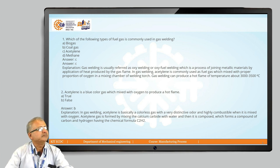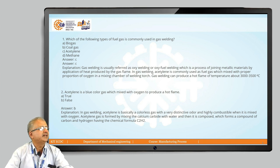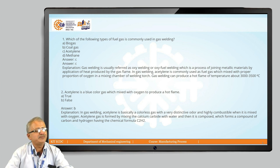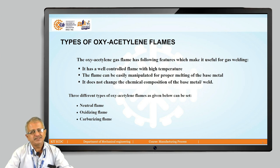The next question: acetylene is a blue color gas which is mixed with oxygen to produce a hot flame — true or false? The answer is false. In gas welding, acetylene is basically a colorless gas with a very distinctive odor and it is highly combustible. Acetylene gas is formed by mixing calcium carbide with water, and it is a compound of carbon and hydrogen having the chemical formula C2H2. That is why it does not have that color.